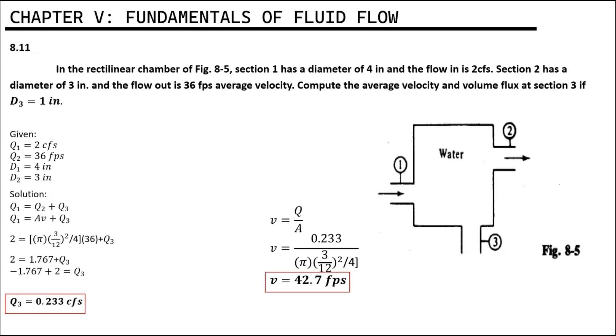We already computed the value of Q3 which is equal to 0.233 CFS and the value of V which is equal to 42.7 FPS. That's it. I hope you learned something from this video. Thank you.